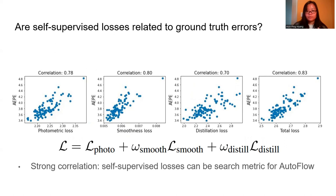We find a strong correlation between the self-supervised loss and the ground truth error. This suggests that the self-supervised loss can serve as a reliable search metric for learning Autoflow.